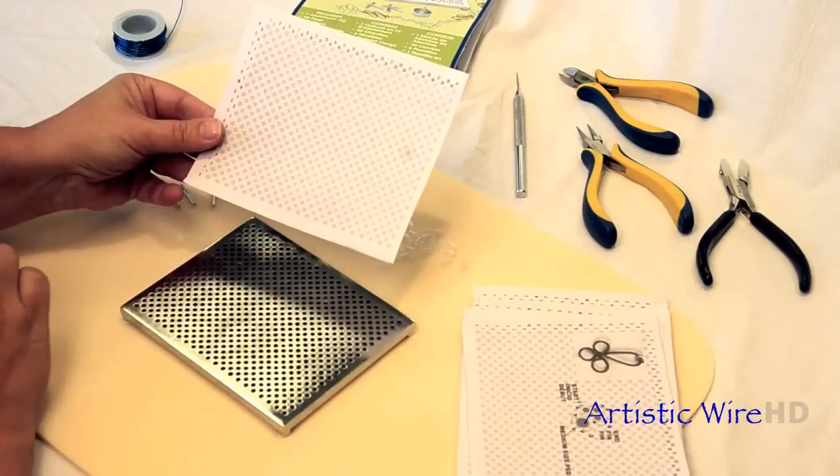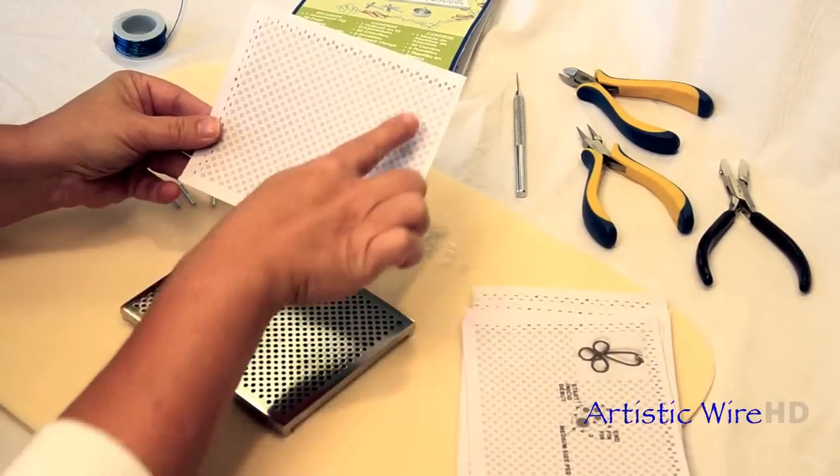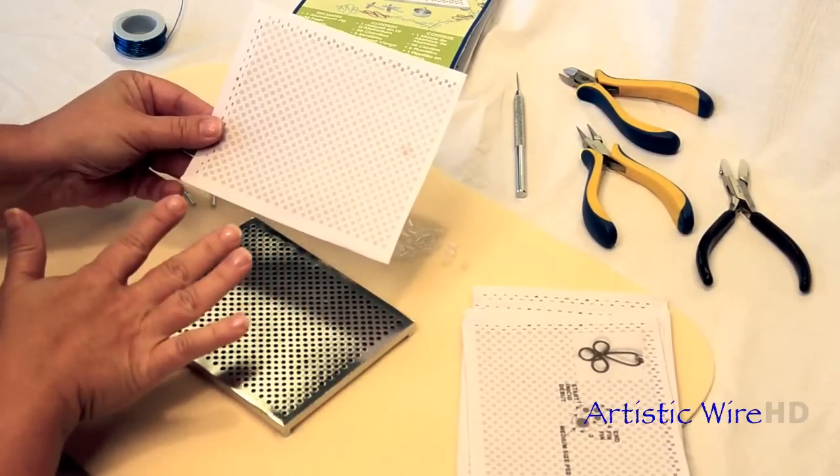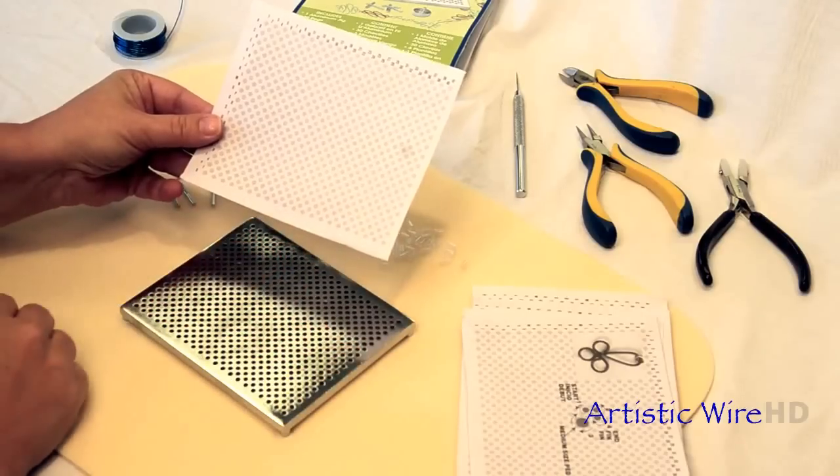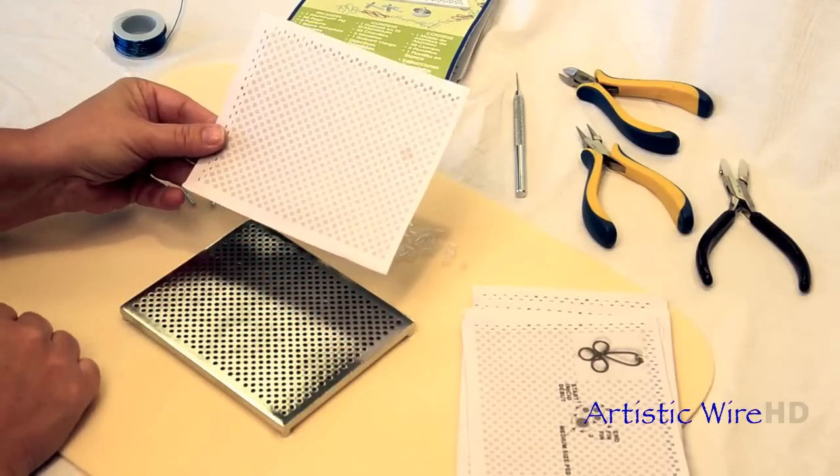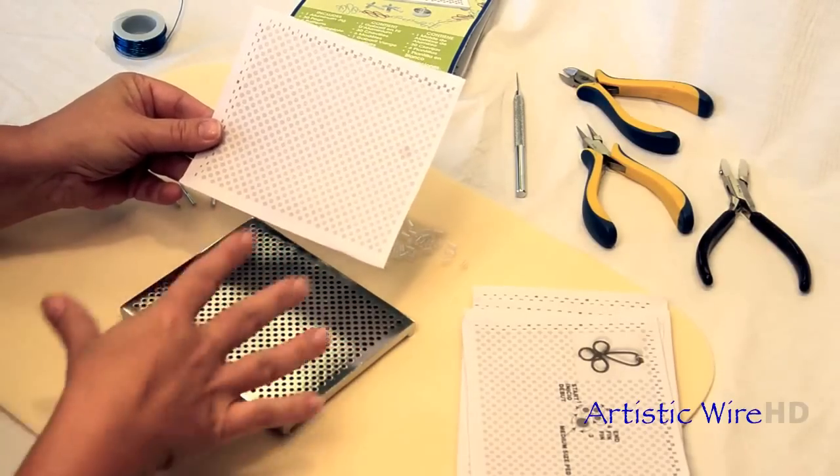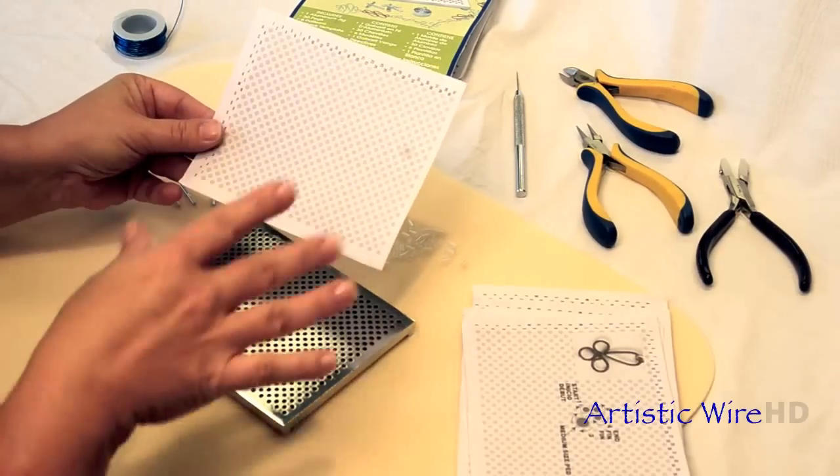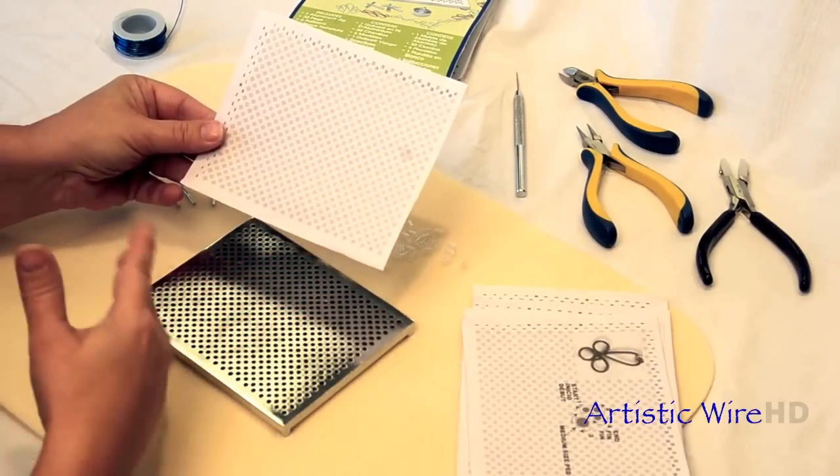Probably one of my most favorite things to do is to use the blank pattern that comes with your kit. Now you are going to want to make many copies of this because this is where your imagination will come to life and you can create stars and crosses and all kinds of different shapes for anything that you want to do.